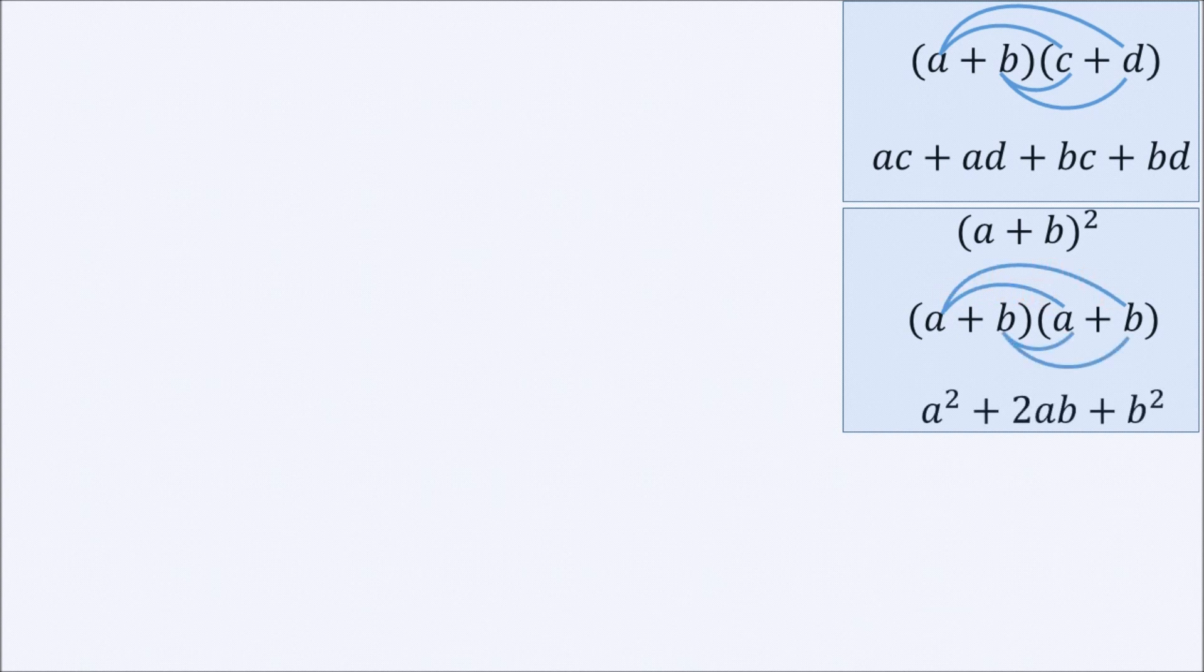we will end up with A squared plus AB and then multiplying the second element of the first bracket by the two elements in the second bracket. We have another AB, so it becomes 2AB plus B squared. So this is the rule for squaring a bracket: A squared plus 2AB plus B squared.